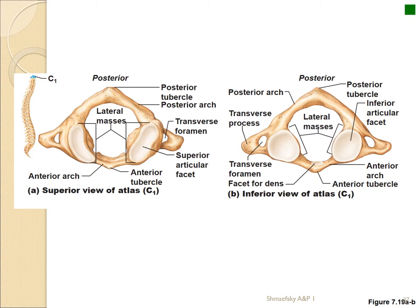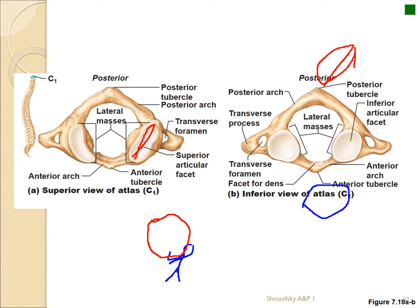Cervical vertebra number 1 is called the atlas because it holds up the skull, like the mythical Atlas holding up the world. The atlas has huge articular surfaces that attach to the occipital bone above and to C2 below. Notice the very large opening and wide spread appearance. There is essentially no posterior spinous process — it's gone. This is a unique and recognizable bone.